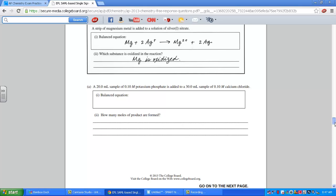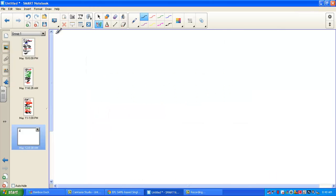Let's take a read through for the first example, letter A. We have 20 mL sample of a 0.1 molar potassium phosphate being added to a 30 mL sample of 0.1 molar calcium chloride. Notice that the balanced equation must be a net ionic form and we want to know how many moles of product there are. So let's go to work page and see what we have.